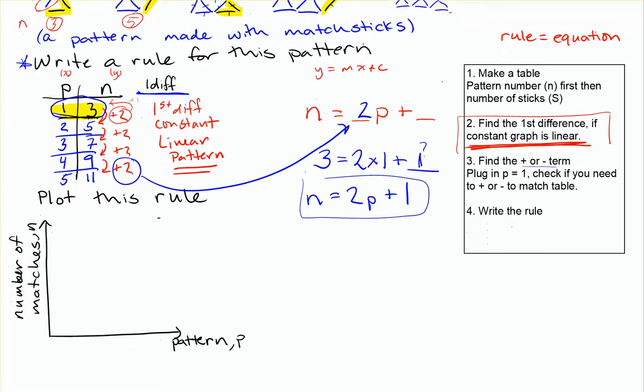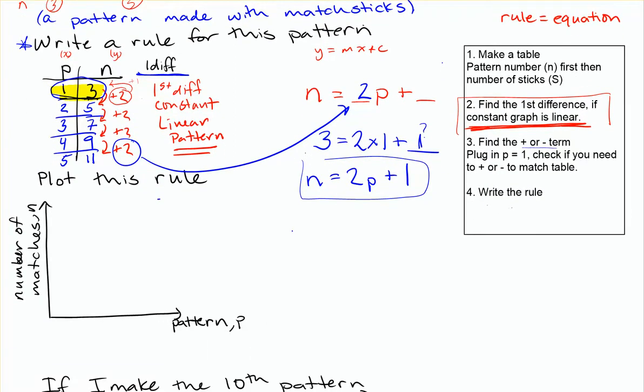Now there's usually a couple other steps involved in this that they ask you to now use the rule, or use the information out of your table. So if I asked you to plot this rule, and I give you axes here with the pattern number across the bottom, remember, similar to x and y. The number of matchsticks is going vertically there, that's your n.